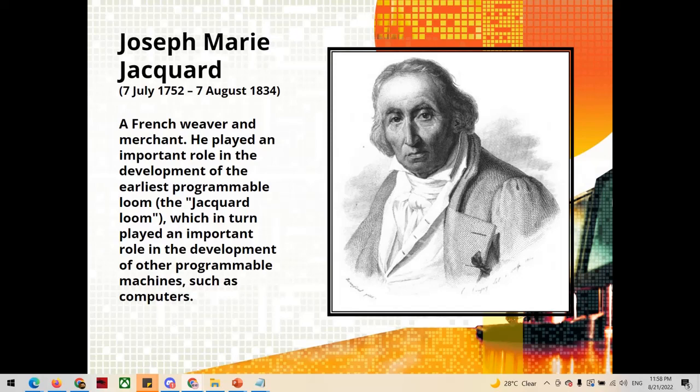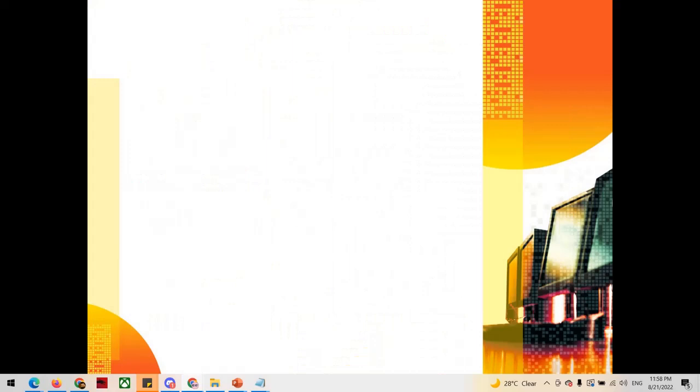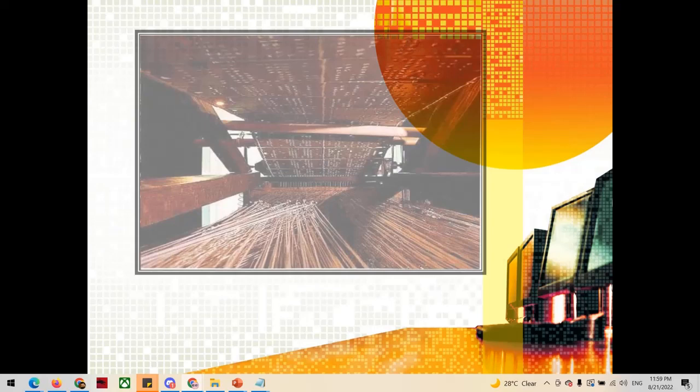The next we have is Joseph Marie Jacquard. He played an important role in the development of the earliest programmable loom, which played an important role in the development of computers, the first programmable machine. Mr. Jacquard invented the mechanical loom, first demonstrated in 1801, that simplified the process of manufacturing textiles with complex patterns such as brocade, damask, and many more. The loom was controlled by a chain of cards, a number of punch cards laced together in a continuous sequence. This is a sample of Jacquard looms.